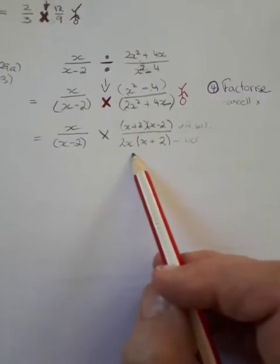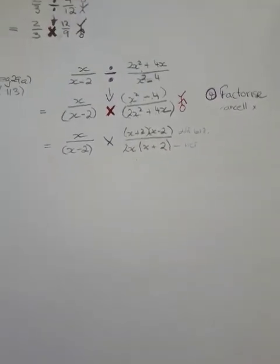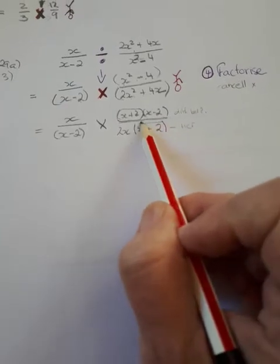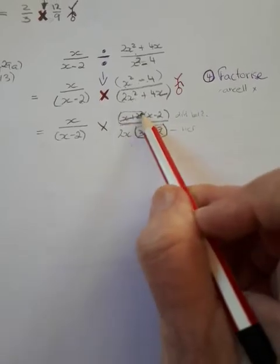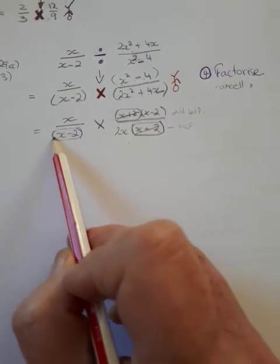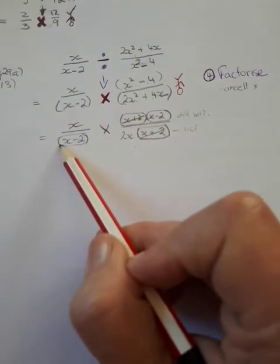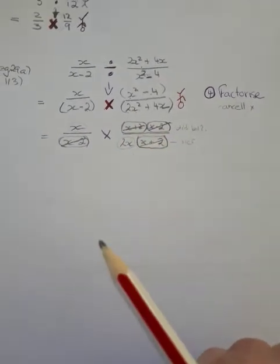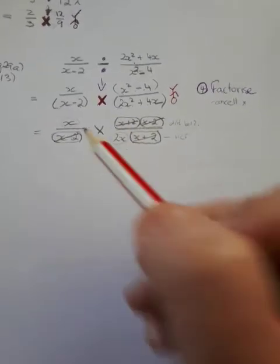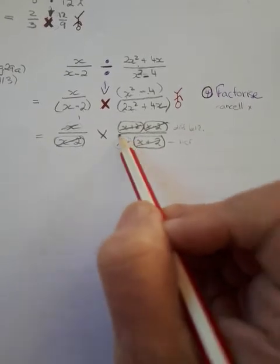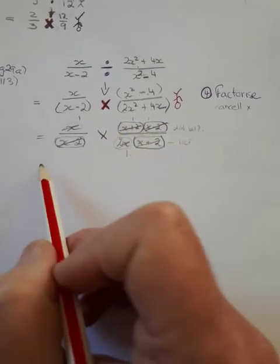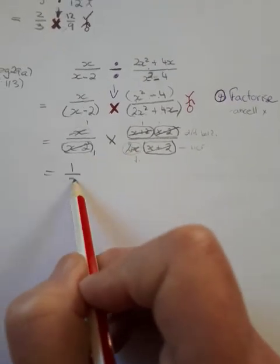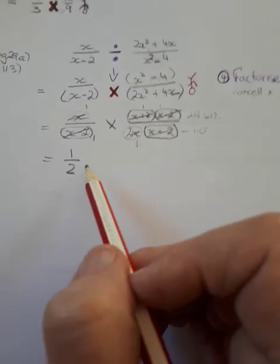Now we have factorized. We can see common factors: x plus 2 as a whole bracket appears here and here, so we can cancel them. x minus 2 as a whole bracket appears here and here, so we can cancel those too. This leaves x at the top and 2x at the bottom, and x divided by x gives 1. At the top I have 1 times 1 which is 1; at the bottom, 2 times 1 which is 2. So the answer to this problem is one half.